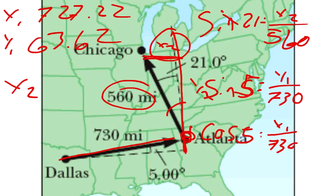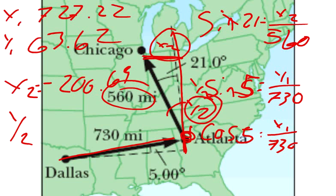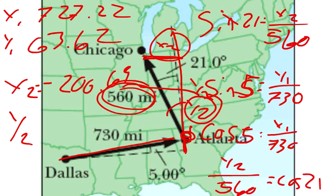Keep in mind we're going in the negative X direction. So negative 200.69 and our Y2. So we got adjacent over hypotenuse. So Y2 over 560 equals cosine 21 degrees. So Y2 ends up equaling 522 approximately.